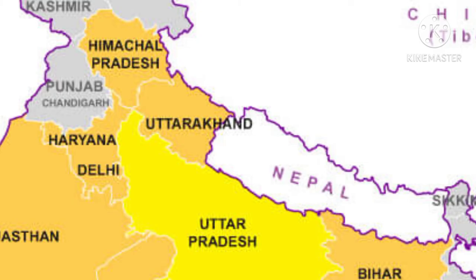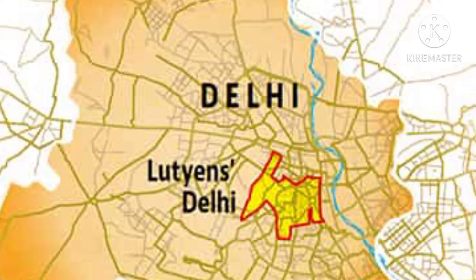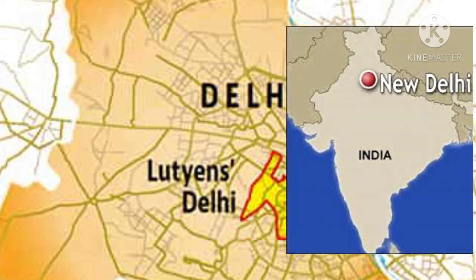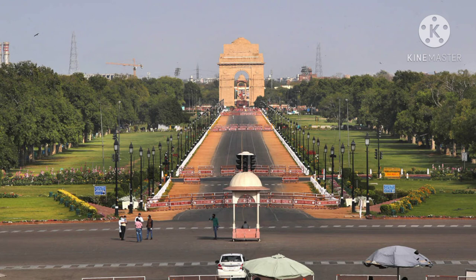Delhi shares its boundary with Uttar Pradesh and Haryana. Delhi is divided into two parts: Old Delhi and New Delhi. The Delhi developed by the British is New Delhi. The official name of Delhi is the National Capital Territory of Delhi. Delhi is the center of the government of India. The President, the Prime Minister, and all the ministers of the central government have their offices in Delhi.